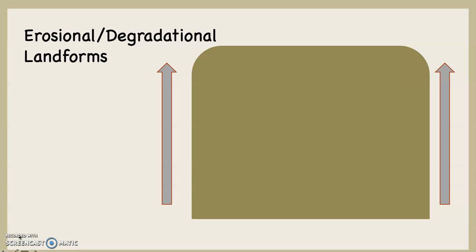If you take a look at this diagram on the right-hand side, let's assume that is a mountain range and that the two gray arrows indicate tectonic uplift. So this is a tectonically active landscape. When you have a tectonically active landscape with uplift, that uplift is going to increase the slope of the landscape, and when you increase the slope, you increase the velocity at which water flows across the surface.